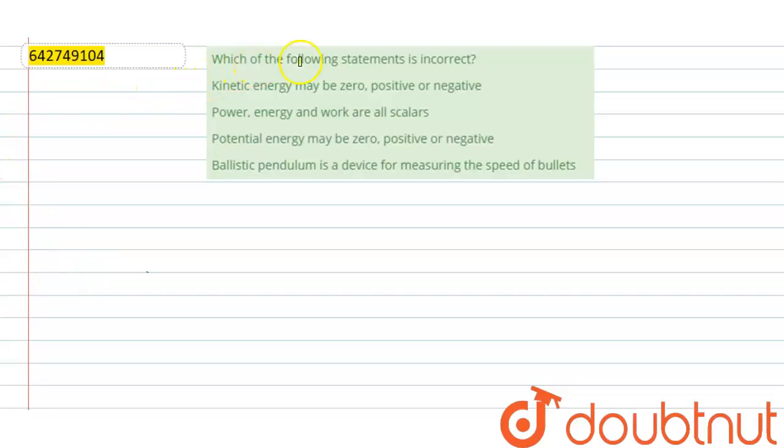Question is: which of the following statements is incorrect? Kinetic energy may be zero, positive or negative. Power, energy and work are all scalars. Potential energy may be zero, positive or negative. Ballistic pendulum is a device for measuring the speed of bullets.